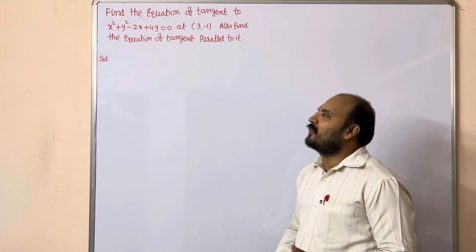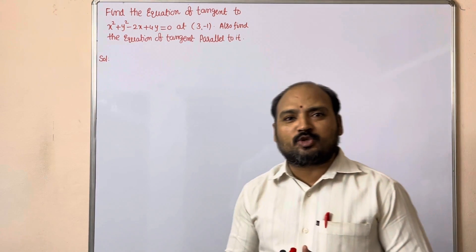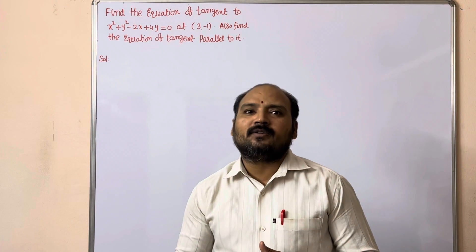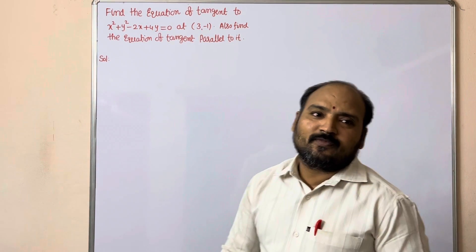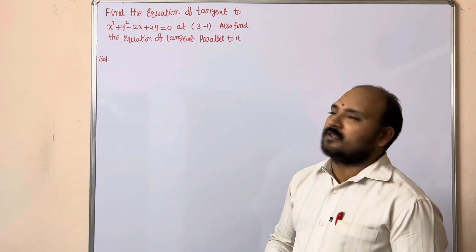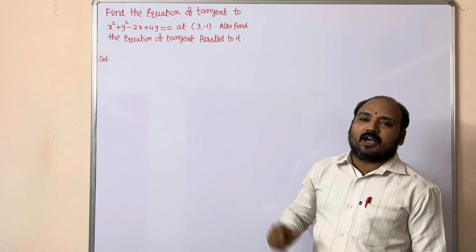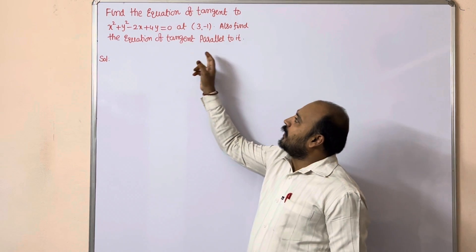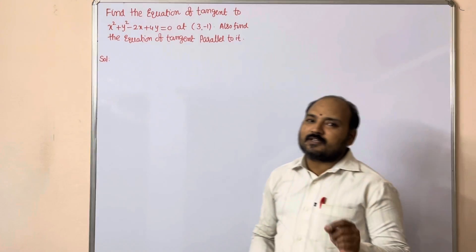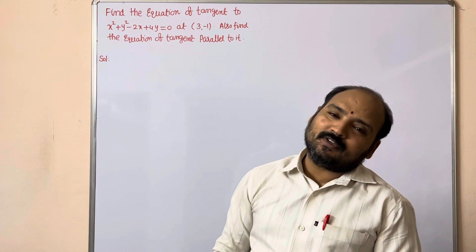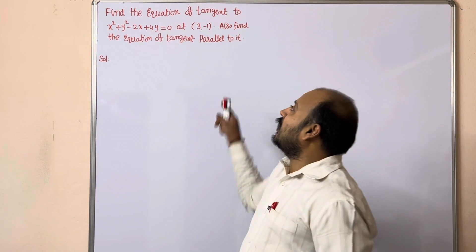Hi dear students, welcome to our channel. We are in four marks questions in circles chapter, Mathematics 2B in Intermediate Second Year. Let us have a discussion on questions which are related to tangents and parallel tangents to the circle. Find the equation of tangent to the circle at point (3, -1), and also find the equation of tangent parallel to it.